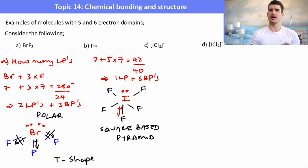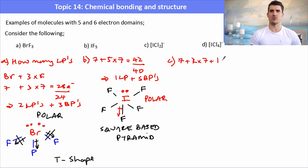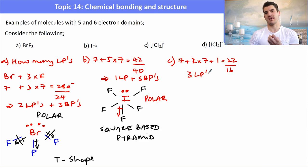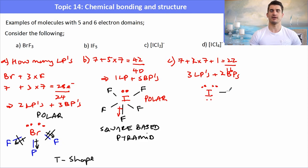For ICl2−: we account for the extra electron — 7 plus 2 times 7 plus 1 gives 22 electrons. The closest octet is 16, so we're 6 electrons away — 3 lone pairs. We have 3 lone pairs and 2 bonding pairs, giving a linear arrangement with the chlorines above and below and the lone pairs in the trigonal planar plane. ICl2− is linear and non-polar.